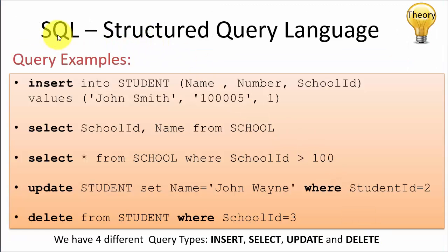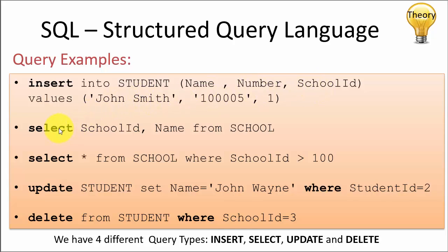In order to do that, we need to know some basic Structured Query Language. Here are some query examples. Basically we have four different types of queries: insert, select, update, and delete. Insert is used to insert data within a specific table — for example inserting into a student table with name, number, and school ID. Select is used to get data from a specific table, for example getting data from a school table where school IDs are above a specific limit. Update is used to change data within the database, and delete is used to remove data.